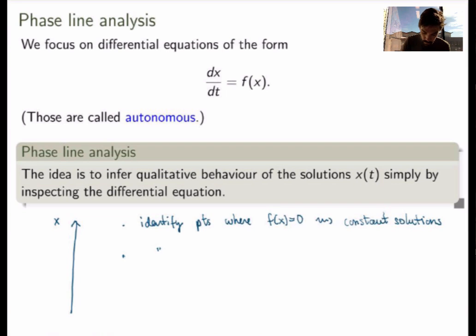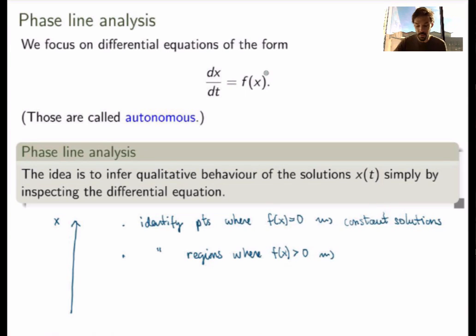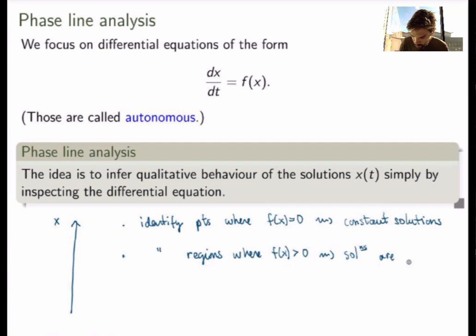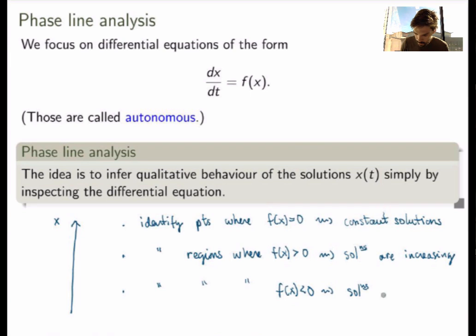Next, we identify regions on the phase line where f(x) is positive. If the right-hand side is positive, that means dx/dt is positive, which means the slope of the tangent lines to the solutions will be positive — in other words, the solutions will be increasing. So in regions on the phase line where f(x) is positive, we know the solutions are increasing. And of course, we do the same for regions where f(x) is negative, which gives us solutions that are decreasing.